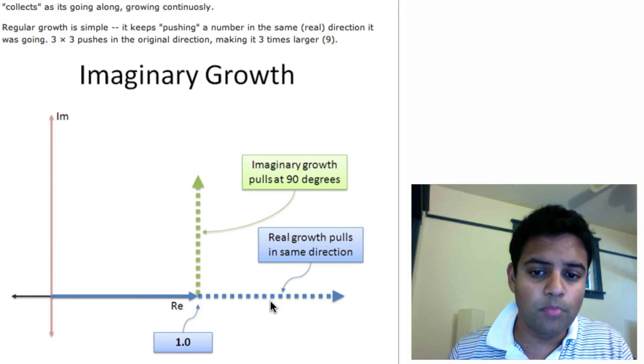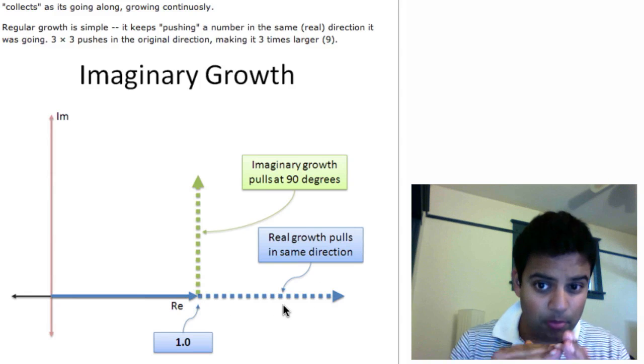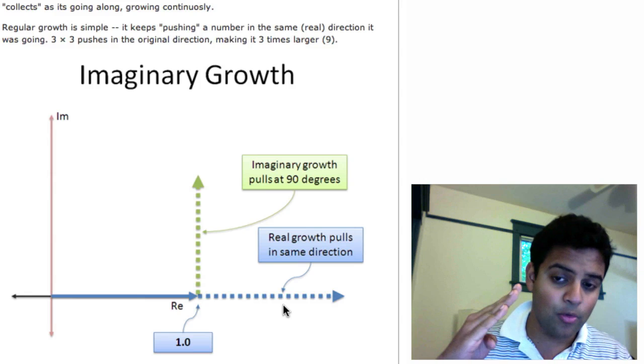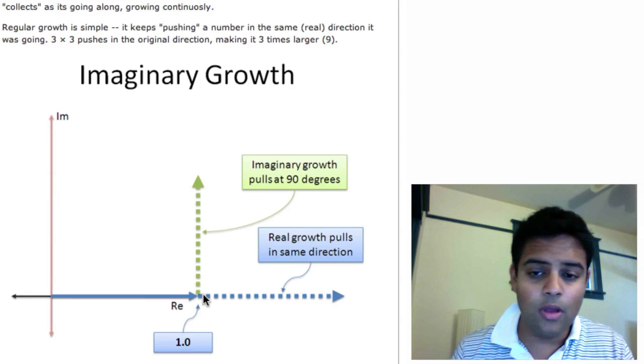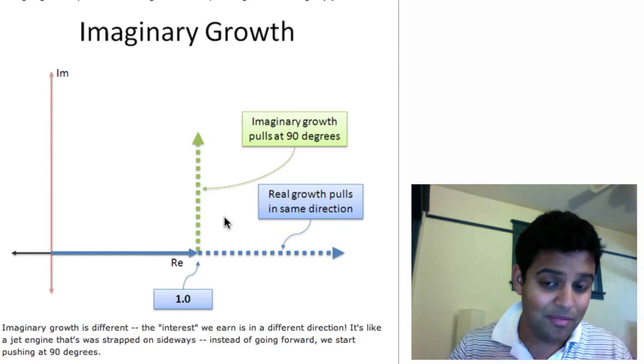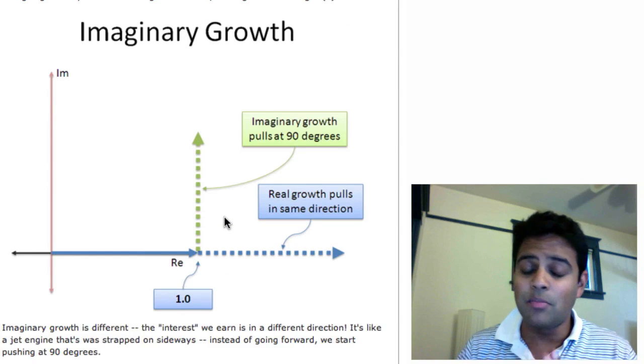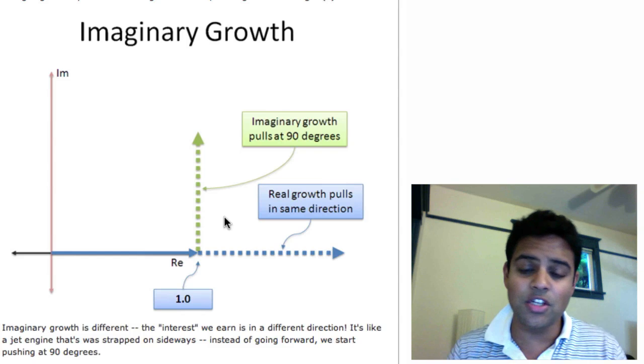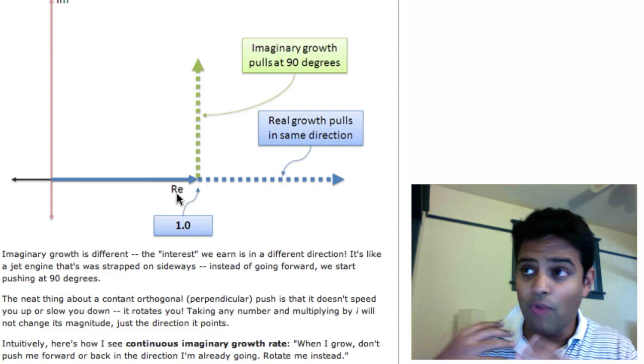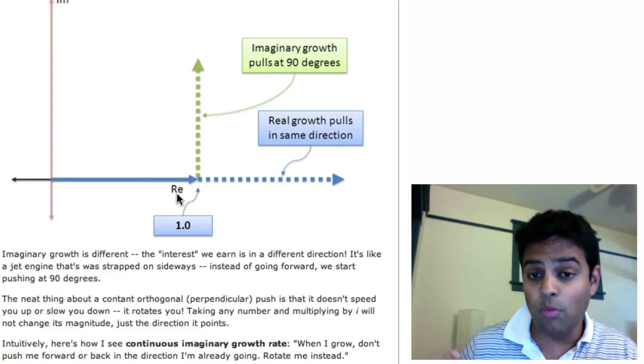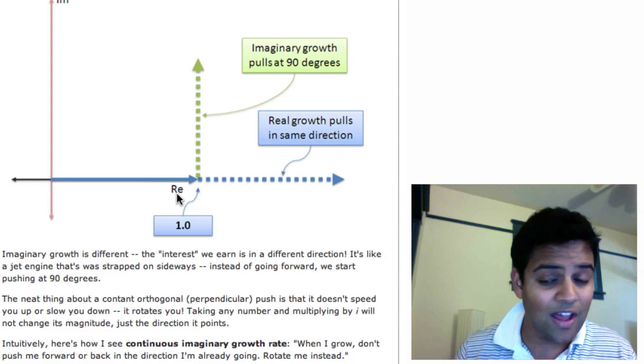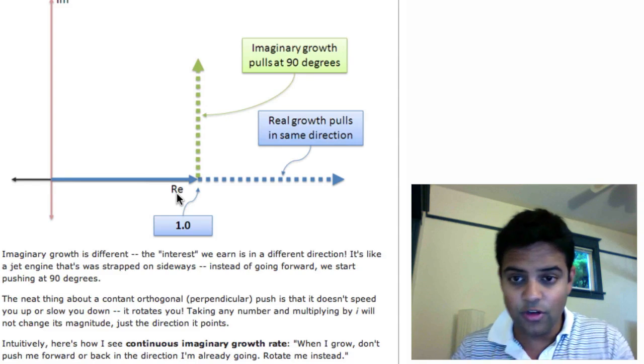This is a little bit different. With imaginary growth, instead of being pulled in the same direction, we're always being pulled perpendicular. So we're going this way, and suddenly we get a hit to go upwards, and then we get another hit to go sideways. So these hits, or this interest actually, this imaginary interest, doesn't actually keep pulling us faster and faster, because each time we get it, it's in a different direction. So it never accumulates. And so that's one of the big differences, that with regular exponential growth, we get more and more. But with imaginary exponential growth, we only rotate.